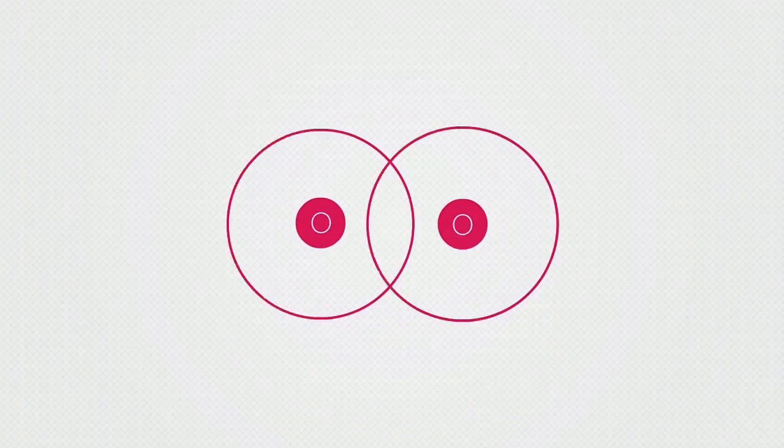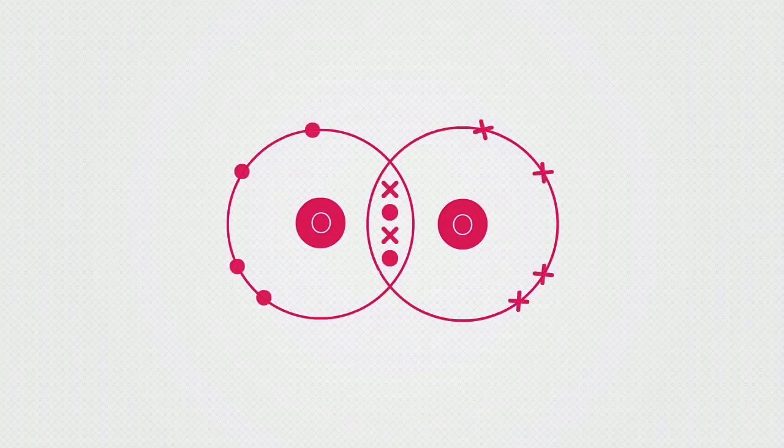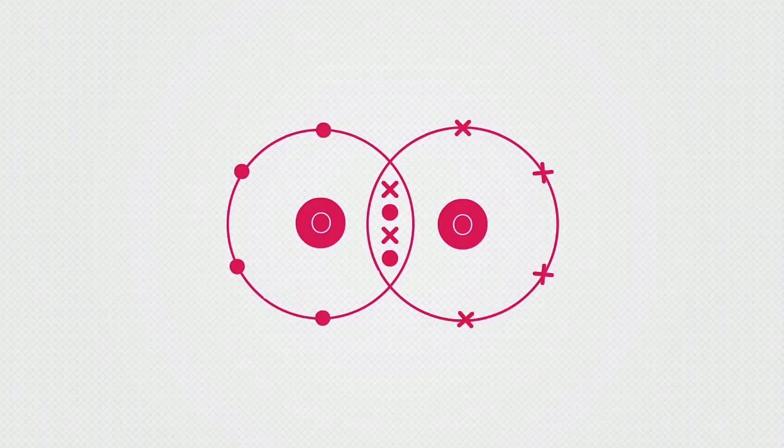Whenever you draw a dot and cross diagram, wherever possible, you should ensure that A the electrons are equally spaced, and B that they are paired.